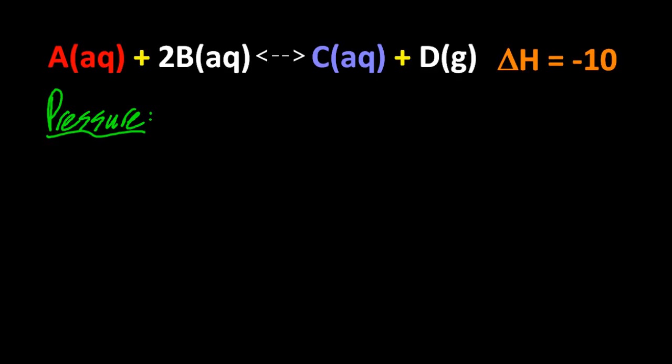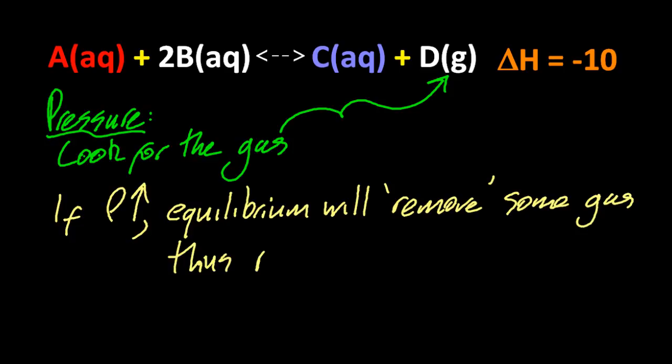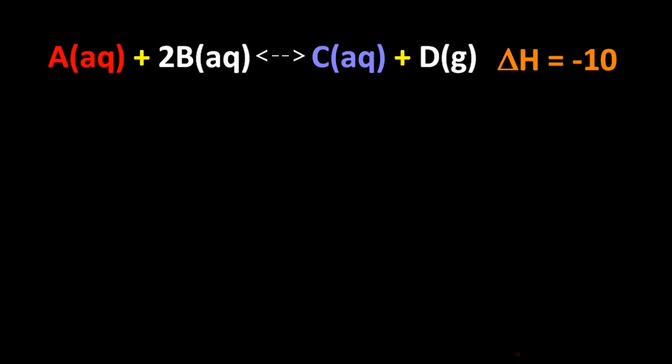Let's look at the effect of pressure. So for pressure, you've got to look for gas in the equilibrium. And that's going to tip you off on how to deal with it. Now if the pressure goes up, the equilibrium is going to try to remove some gas. And that's going to reduce the pressure or the stress on the equilibrium. You increase the pressure, the equilibrium tries to remove some pressure. It's going to shift to the left and it's going to be redder because it's going to remove gas that way.